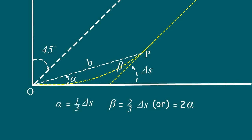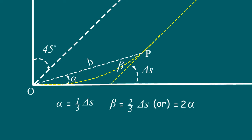Now let us name a few more components and derive some formulas. The curve length at any point on the spiral curve is L. The total curve length to the end of the spiral curve is L. The deflection angle to any point on the spiral curve from the initial tangent is theta. And the deflection angle to the end point of the spiral curve from the initial tangent is delta S.